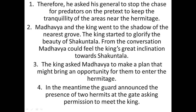Madhya and the King went to the shadow of the nearest grove after giving orders to the general to stop the chase. After going to the grove, the King and Madhya started to glorify the beauty of Sakuntala. The King wanted to let Madhya know the beauty of Sakuntala, so he started to praise her. From the conversation, Madhya could feel that the King had a great inclination towards Sakuntala.